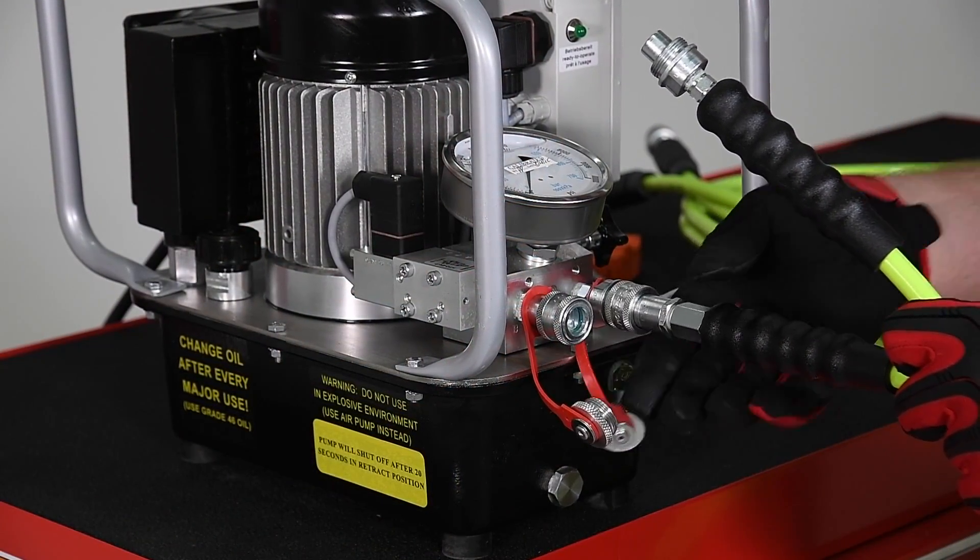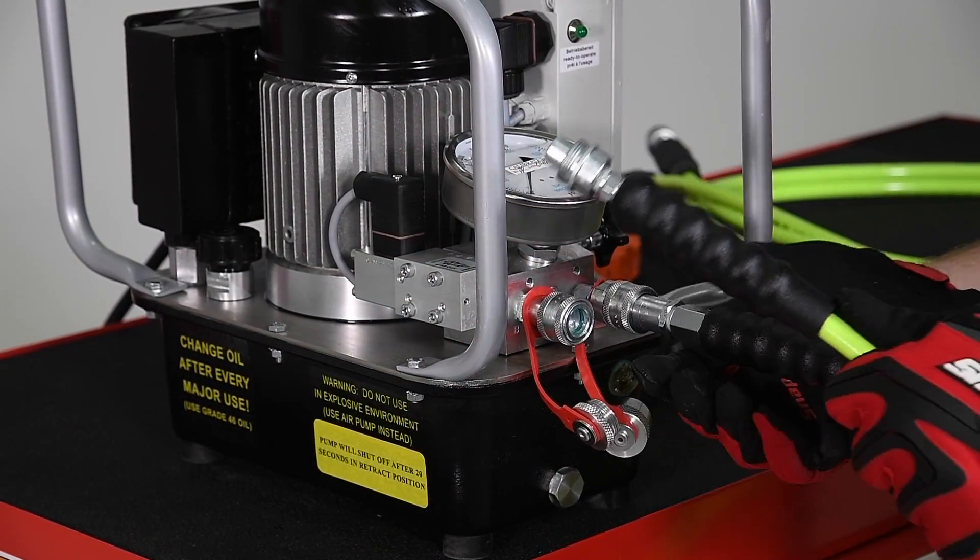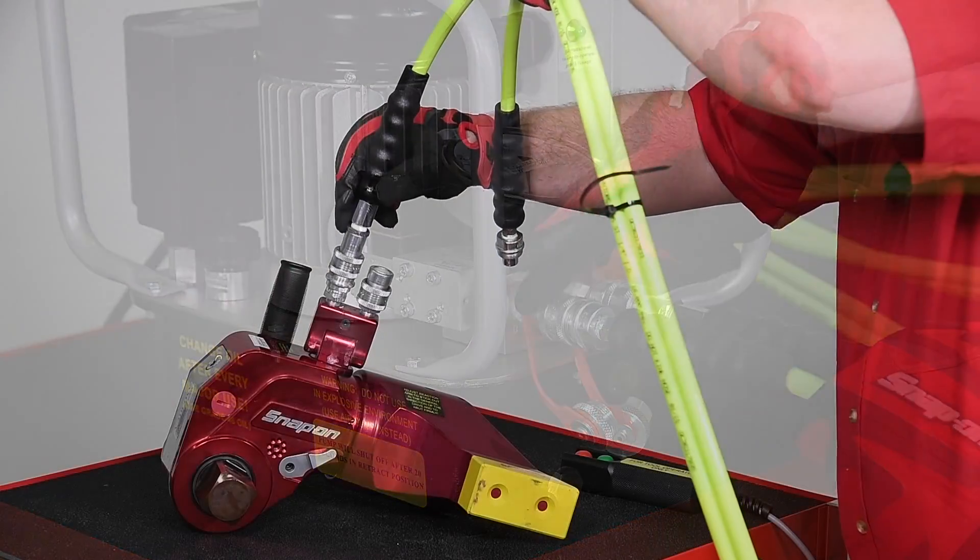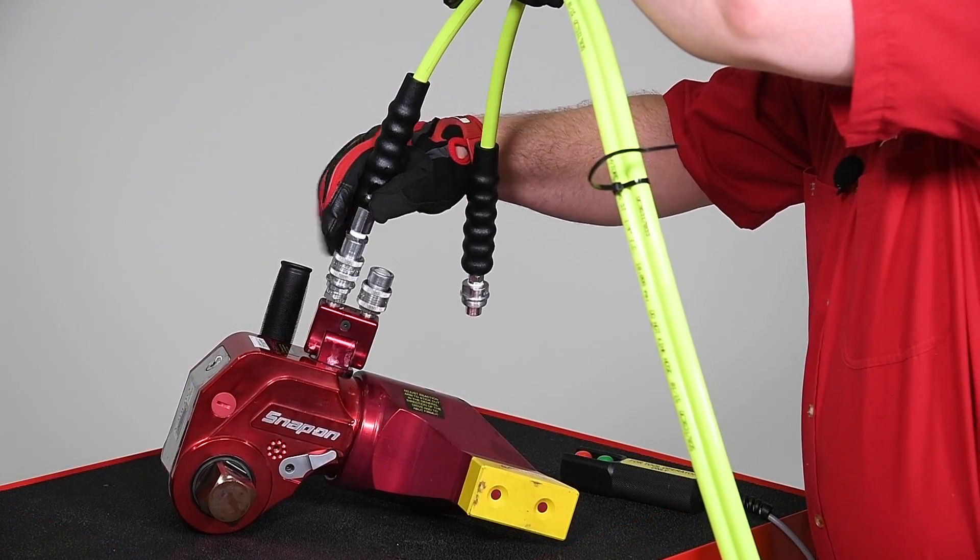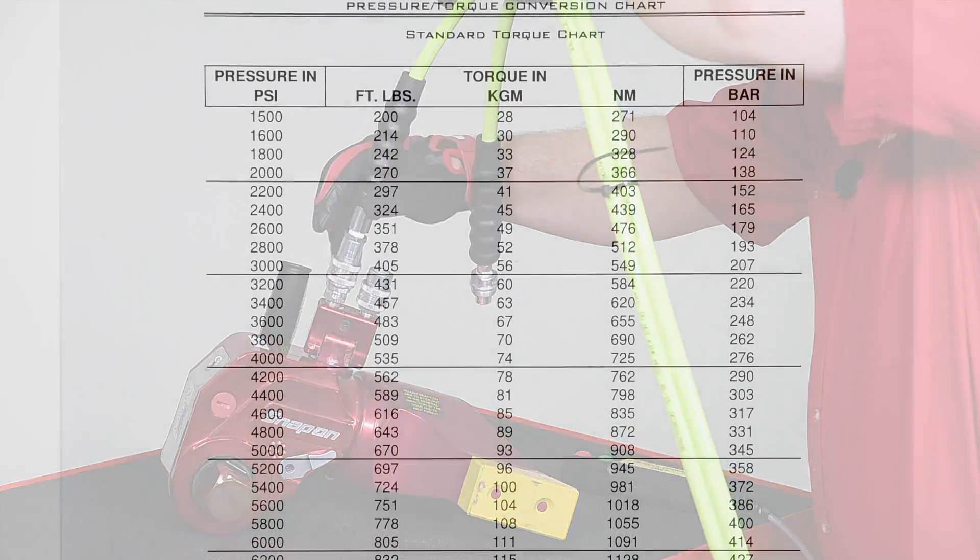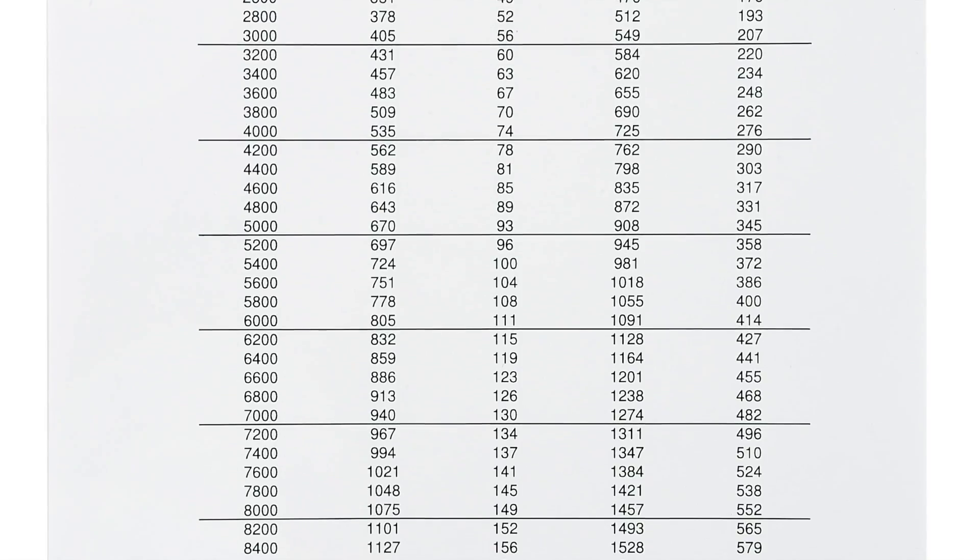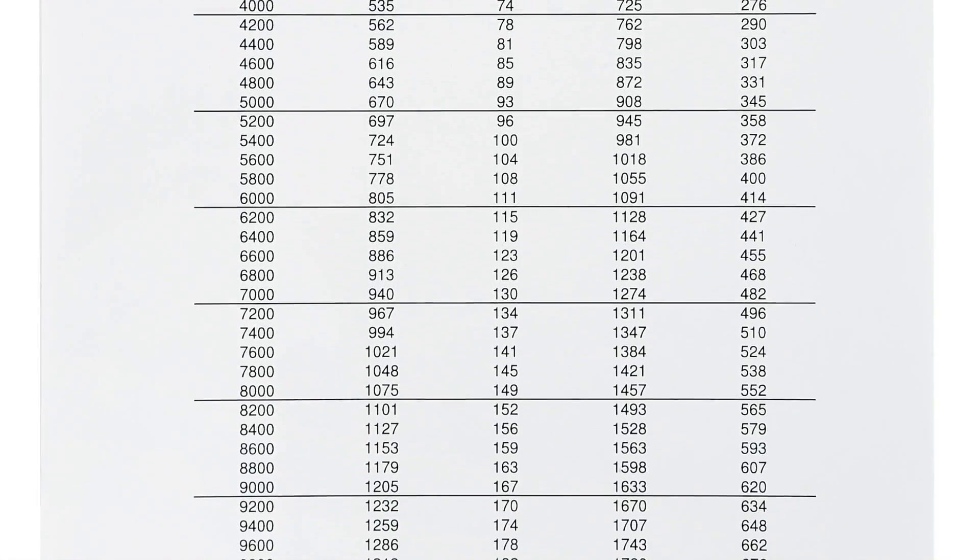If you've been following the Snap-on hydraulic bolting system video series, you already know how to set up and operate your hydraulic pump and connect the hydraulic lines to the wrench. Be sure you have the hydraulic pump adjusted to the appropriate pressure by referring to the torque chart that came with your wrench.